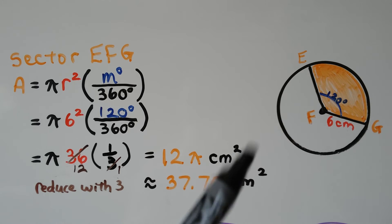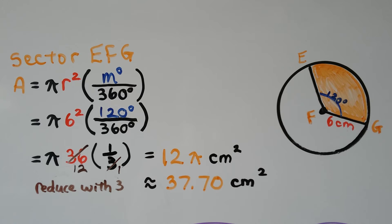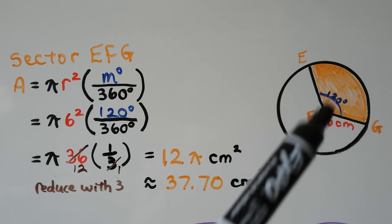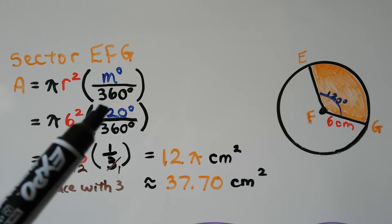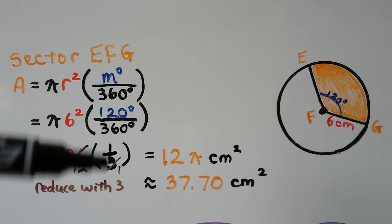Here we have Sector EFG, that's this orange area. We want to find the area, we use our formula, we substitute in our values. We can see the radius is six centimeters, so we have six squared. We can see this angle is 120 degrees, and 120 over 360 is one third.